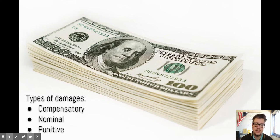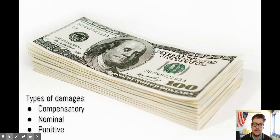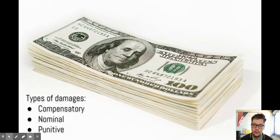Finally, punitive damages. Those are added on top of the compensatory damages. That's the way the court sends a message to the defendant and to other companies usually, to say: you need to do the right thing for your customers and be more careful with what you're doing.